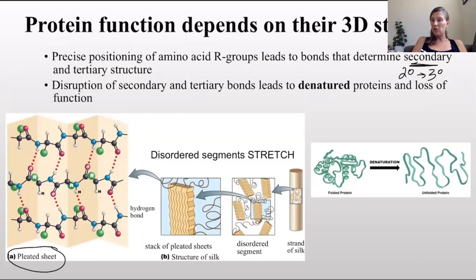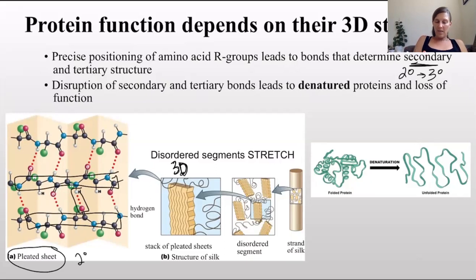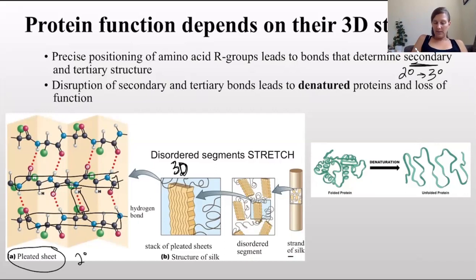Here's an example of a beta pleated sheet - that's the secondary structure. Notice we have hydrogen bonding of the backbones; R groups are not involved here. However, when they come together they form a three-dimensional tertiary structure. If we have multiple three-dimensional shapes coming together, that would be quaternary - forming for example a strand of silk.